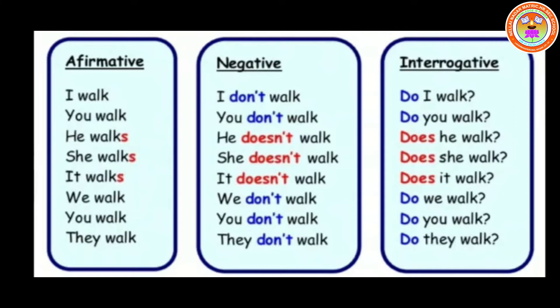Only when you go for the third person singular — that is he, she, it — because of 'don't' we use 'doesn't': he doesn't walk, she doesn't walk, it doesn't walk. For the interrogative, everywhere you use 'do' except with the third person singular. So: do I walk, does he walk, does she walk, does it walk. Any sentence can be written in three forms: affirmative, negative, and interrogative.